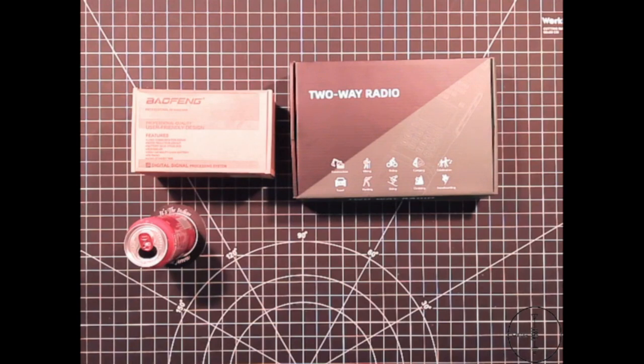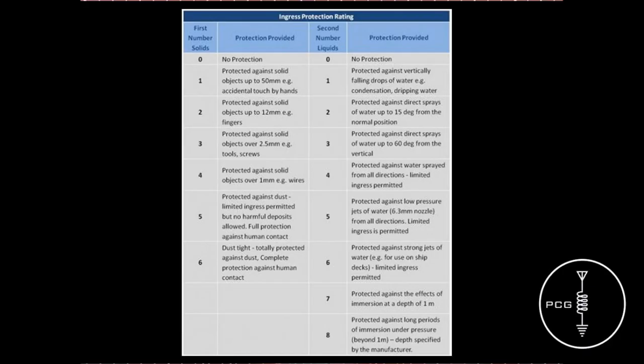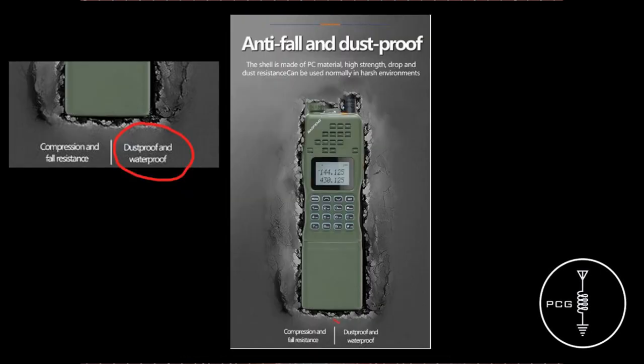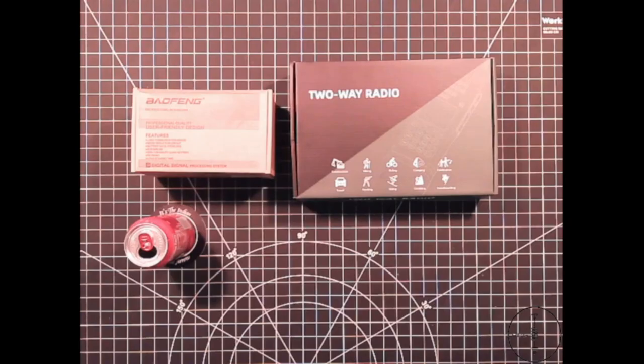As in episode 8 stress test, I'll post a link in the description below that explains IP ratings in more detail, but the AR-152 touts an IP-54 rating as well as advertisements claiming it's waterproof. For some context, if you'll recall in episode 8, the UV-9R and GT-3WP were advertised with an IP-67 rating.